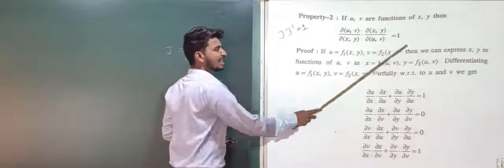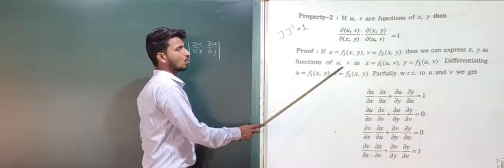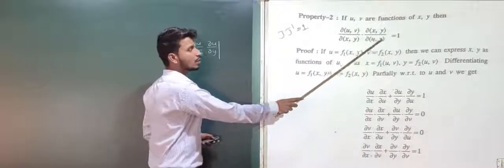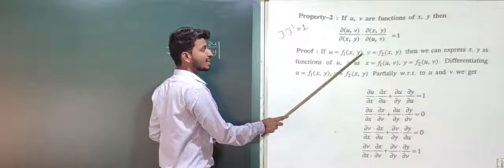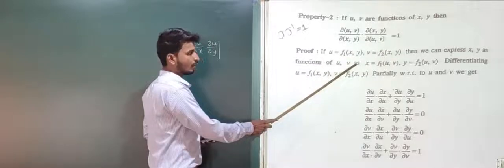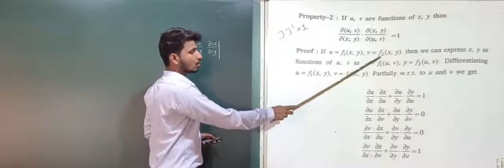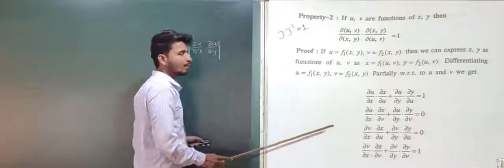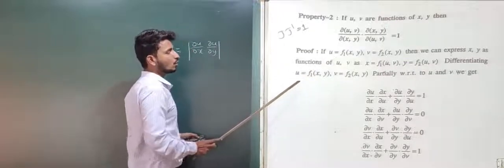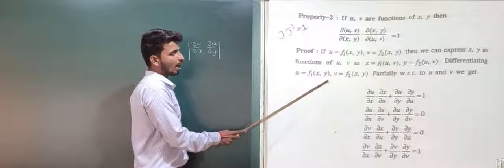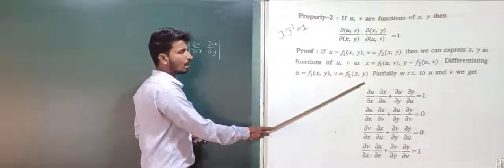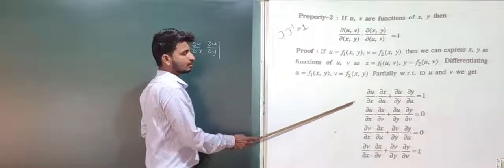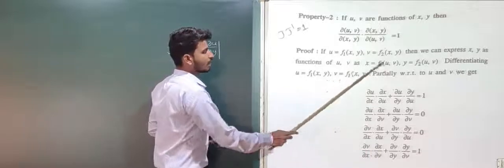If u = f₁(x,y) and v = f₂(x,y), then we can express x and y as functions of u and v: x = f₁(u,v) and y = f₂(u,v). Next, differentiating u = f₁(x,y) and v = f₂(x,y) partially with respect to u and v, we proceed to find the required relations.